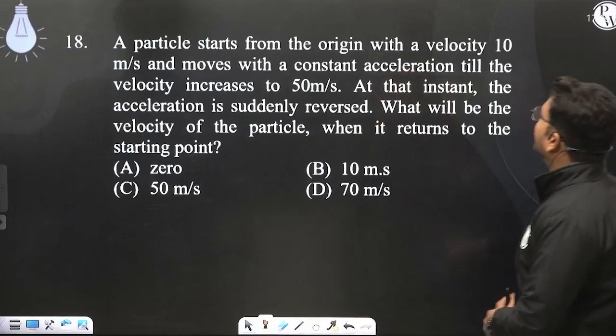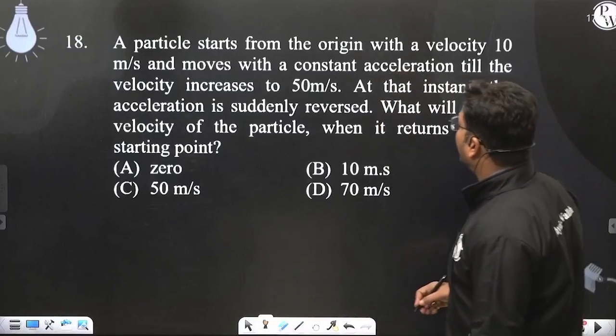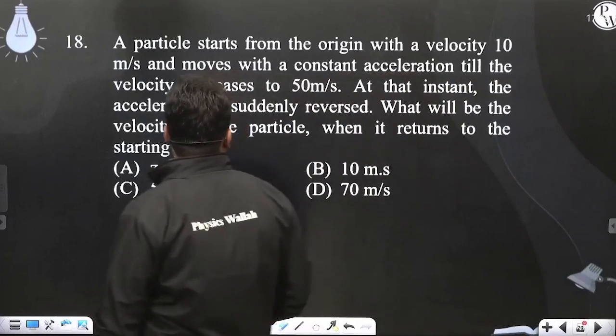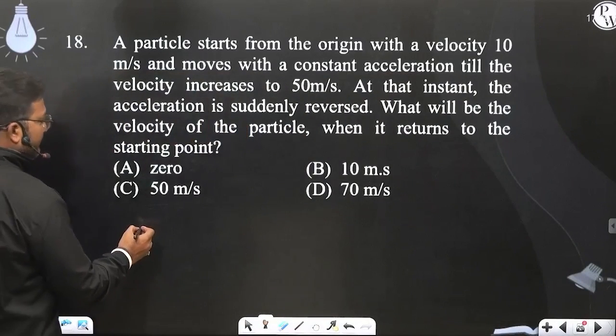A particle starts from origin with a velocity 10 meter per second and moves with a constant acceleration till the velocity increases to 50 meter per second.